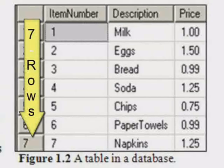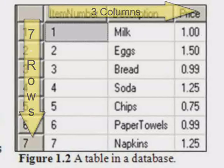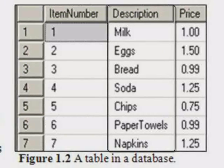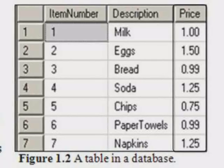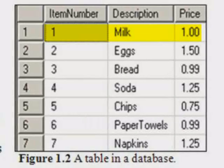Figure 1.2 shows a shopping list with seven rows and three columns. The first column is item number, the second column is description, and the third column is price. The first row has an item number of one, a description of milk, and a price that equals a dollar.